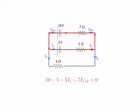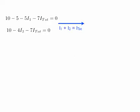Kirchhoff's law says that all of that has to add up to zero. My other loop is around the outside of the circuit, again in the direction I guessed the current will flow: 10 volts from the 10 volt battery, minus 4 times I2 is the voltage drop across the 4 ohm resistor, minus 7 times I_total is the voltage drop across the 7 ohm resistor, and this adds up to zero. I have two loop equations and I want to write everything in terms of I1 and I2, so I replace I_total with I1 plus I2.